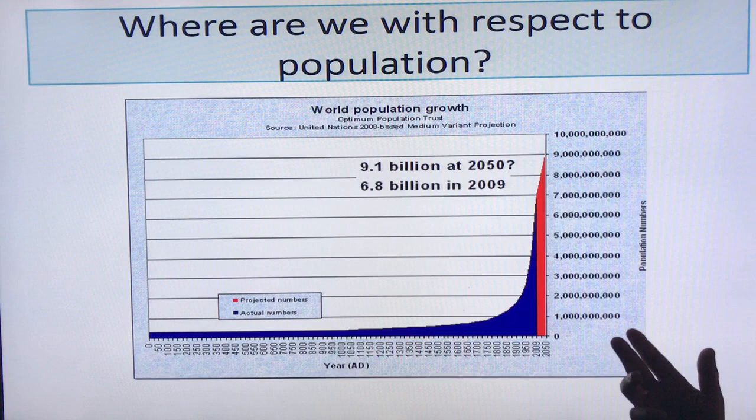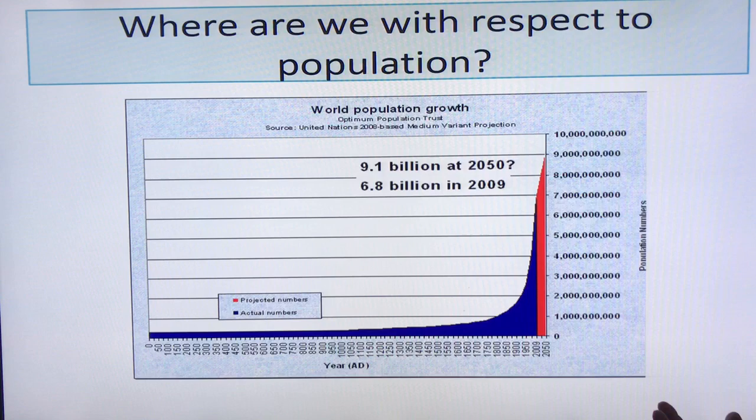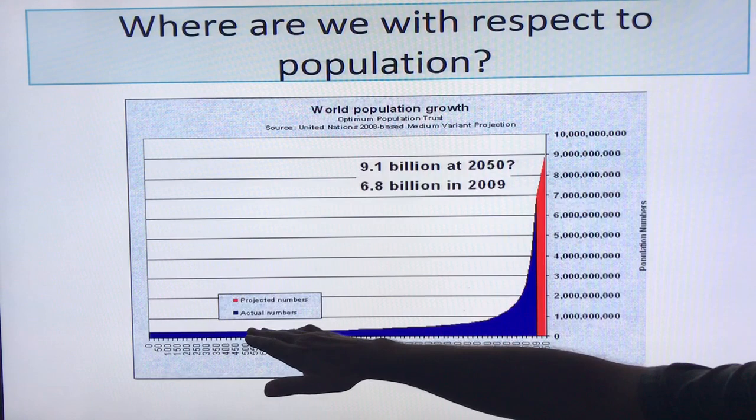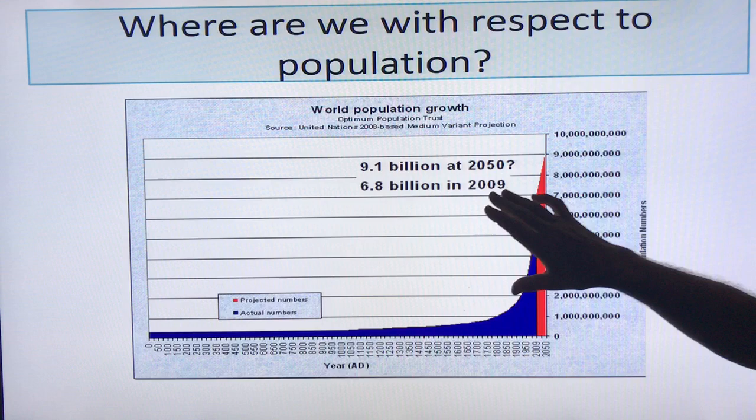Where are we with respect to population? Just Google the world population clock on Worldometers to see where we are today — 7.6 plus billion. This is exponential growth. The actual numbers are shown, and then the projections in red: where are we going to be in 2050? 9.1 billion.